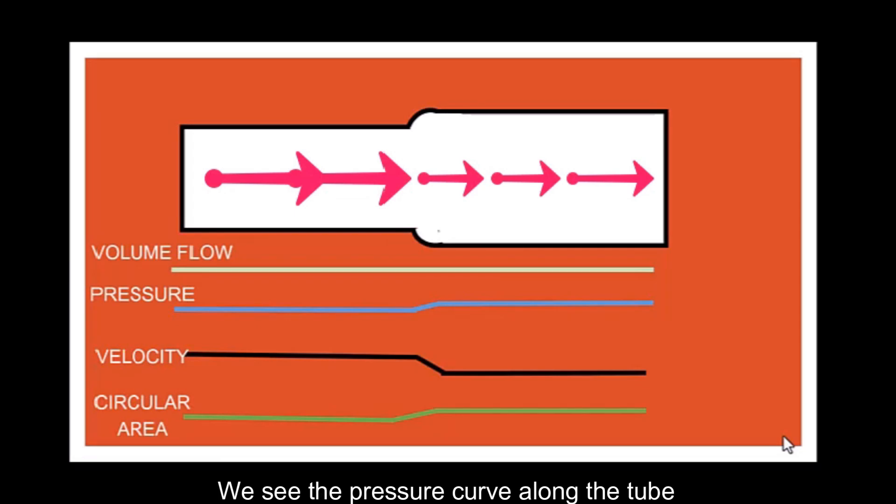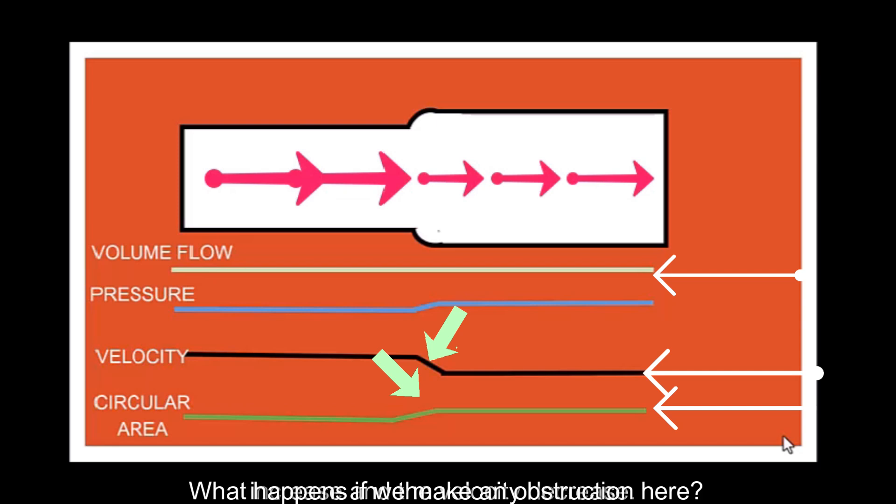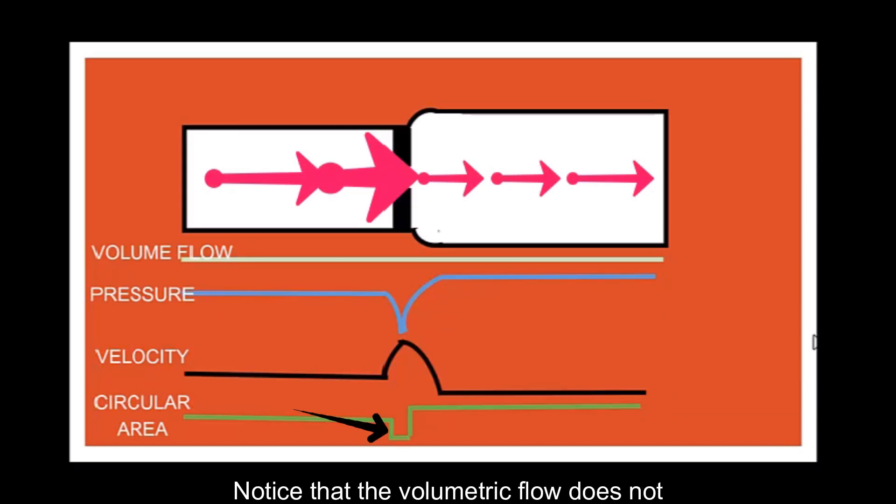What we see here is the Bernoulli Experience explained. Here is a hydrodynamic flow. We see the pressure curve along the tube. Flow rate of this fluid along the tube. The circular area of the tube, you can see that from here the area increases, and the velocity decreases. What happens if we make an obstruction here? Notice that the volumetric flow does not change.